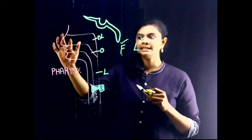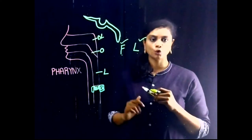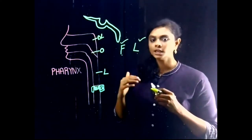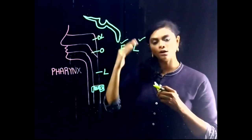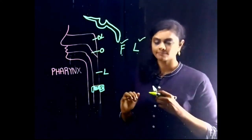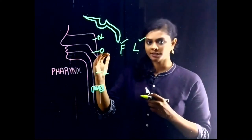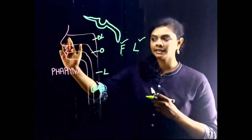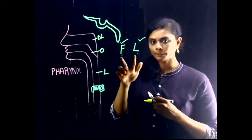Anteriorly, the nasal cavity is present, and inferiorly it is the oropharynx and the pharyngeal isthmus. The isthmus is the opening between the nasopharynx and the oropharynx. So inferiorly there is the oropharynx and pharyngeal isthmus, and anteriorly again the nasal cavity.